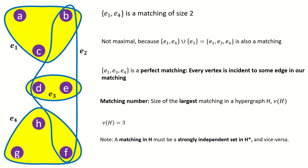Combining these facts, we arrive at our second relationship between hypergraph parameters: the matching number of H equals the strong independence number of the dual of H. Before we move on to our last parameter, the cover number, let's look at a relationship between transversals and matchings.